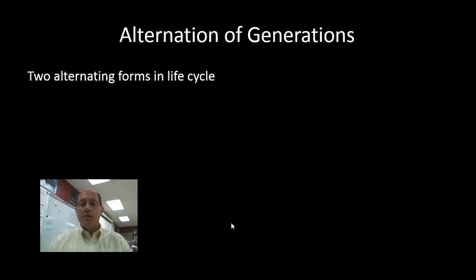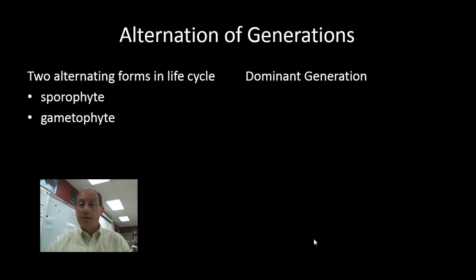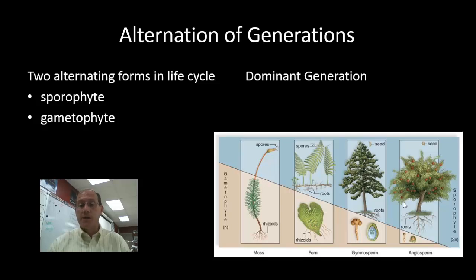All land plants show what is called an alternation of generations, meaning there are two alternating forms in the life cycle: the sporophyte, also referred to as the diploid generation, and the gametophyte, referred to as the haploid generation. Over the evolution of plants, because the sporophyte is the only one that develops vascular tissue, we have seen an increase in the dominant or conspicuous generation. You can see this progression from the moss on the left to a large fruit tree, with the gametophyte being reduced to almost microscopic size in some cases.